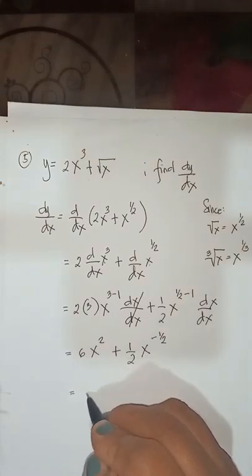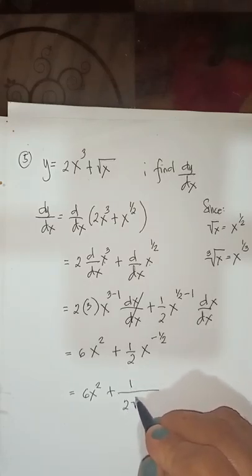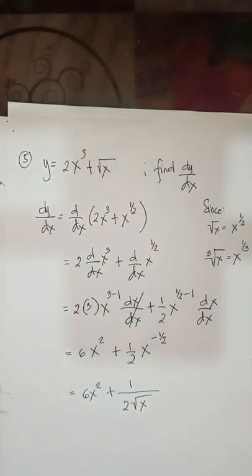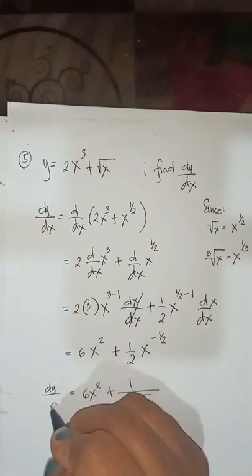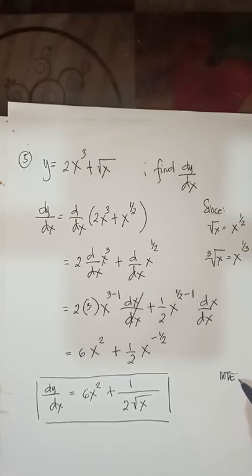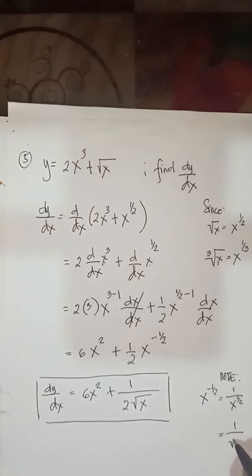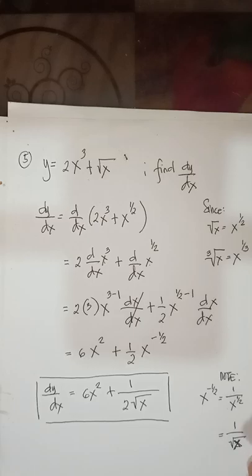You can express the answer as 6x squared plus 1 over 2 times the square root of x. That is your dy/dx. Note: x to the negative 1 half can be brought down as 1 over x raised to 1 half, which is equivalent to 1 over the square root of x. That's the reason you have the square root of x in the denominator.